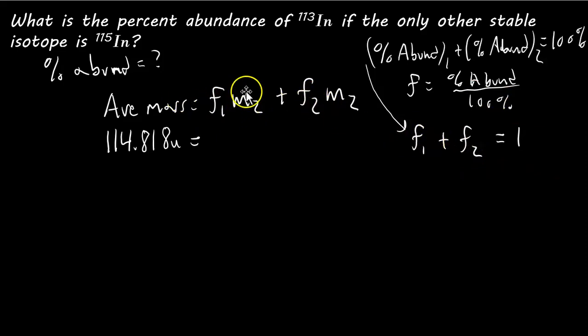And, remember, the fractional abundance is equal to the percent abundance divided by 100%. So, if we convert this equation into fractional abundances, we can say the fractional abundance of one plus the fractional abundance of the other one has to equal one. Now, we'll say that this one represents indium 113. So, we want to solve for that, so we'll just call it F1. And, the mass of indium 113 is 113 u.